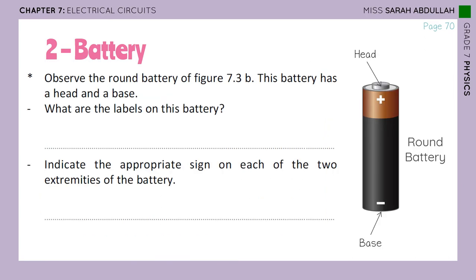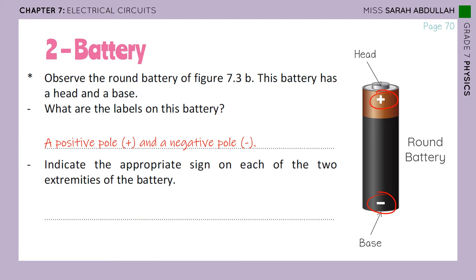Now observe the round battery. This battery has a head and a base — this is the one found in your TV remote control and AC remote control. The head is the positive pole and the base is the negative pole. So what are the labels on this battery? A positive pole and a negative pole, same as the square battery. The head is positive and the base is negative.